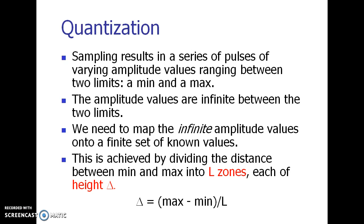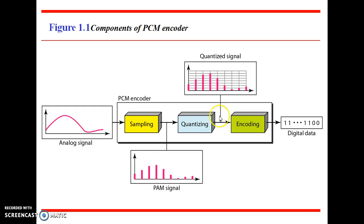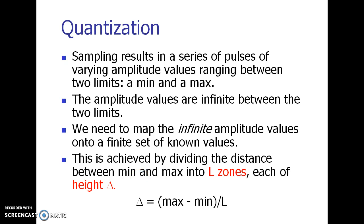Now coming to the next step of PCM encoding: quantization. We have obtained the sampled signals. In quantization, suppose you have samples with amplitude values lying between a_min and a_max. The sample can take any value between these two limits, giving infinite possible amplitude values. We must make discrete amplitude levels so that each sample can only take these discrete values. We round and approximate each sample to its nearest level — this is called the quantization level.